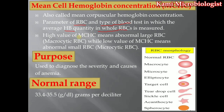When the value of MCH becomes high, it means the RBC size becomes larger. When the value becomes low, it means the RBC size becomes small. In all three cases — MCV, MCH — the RBC size is disturbed.